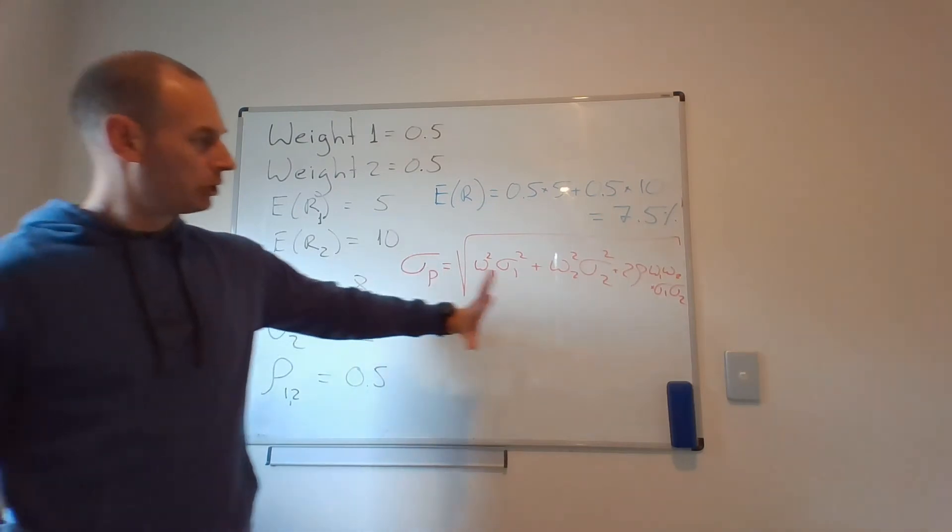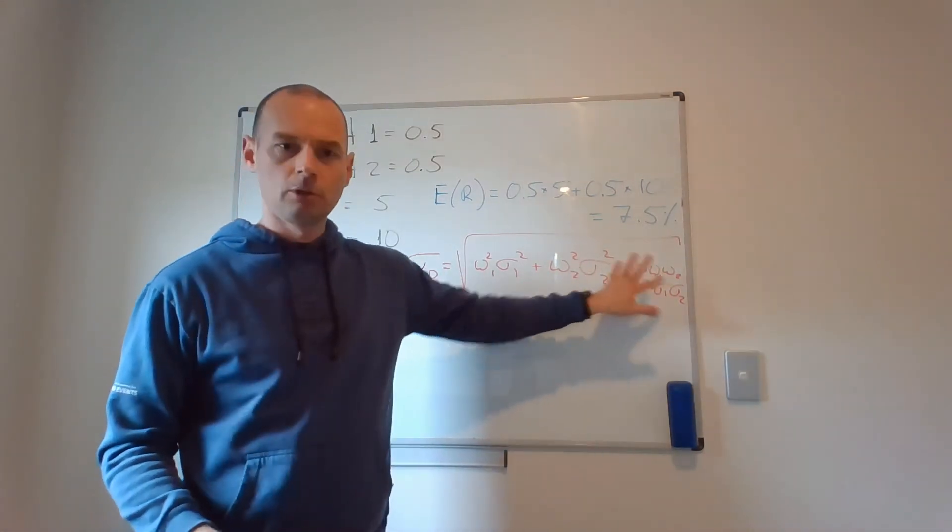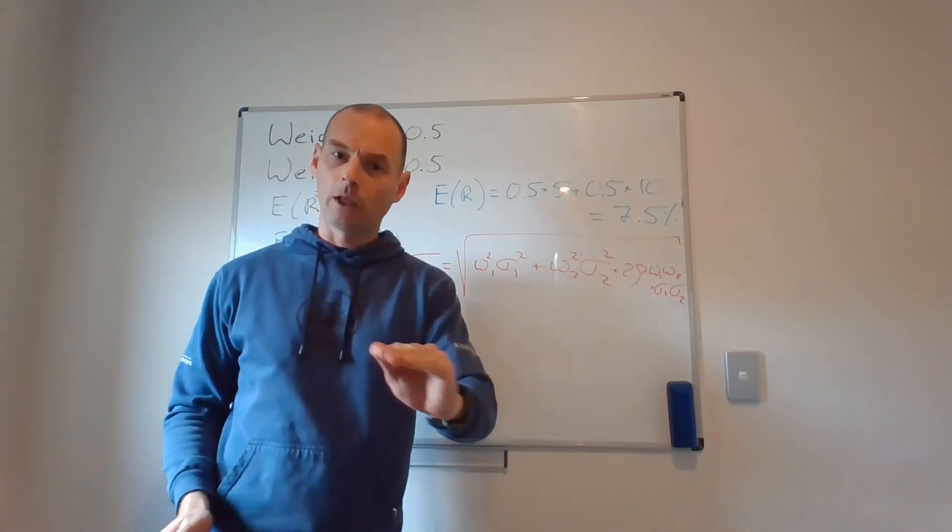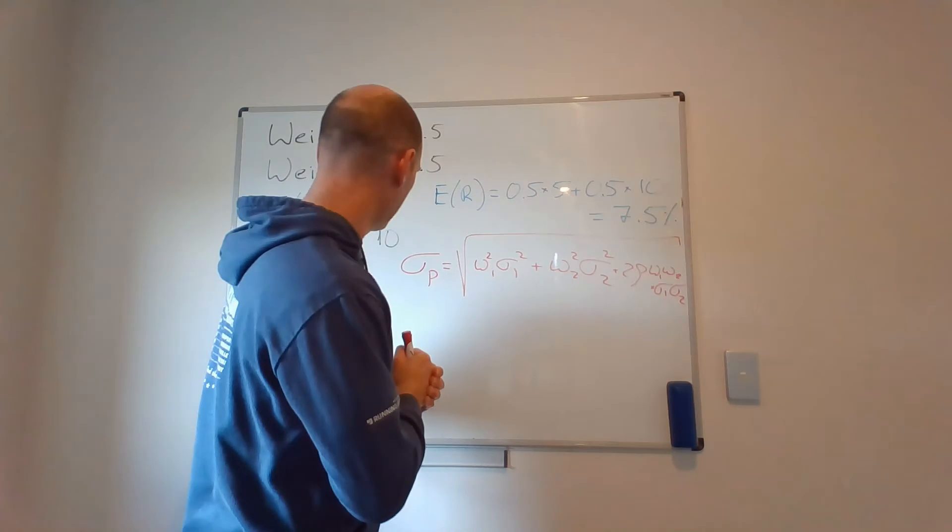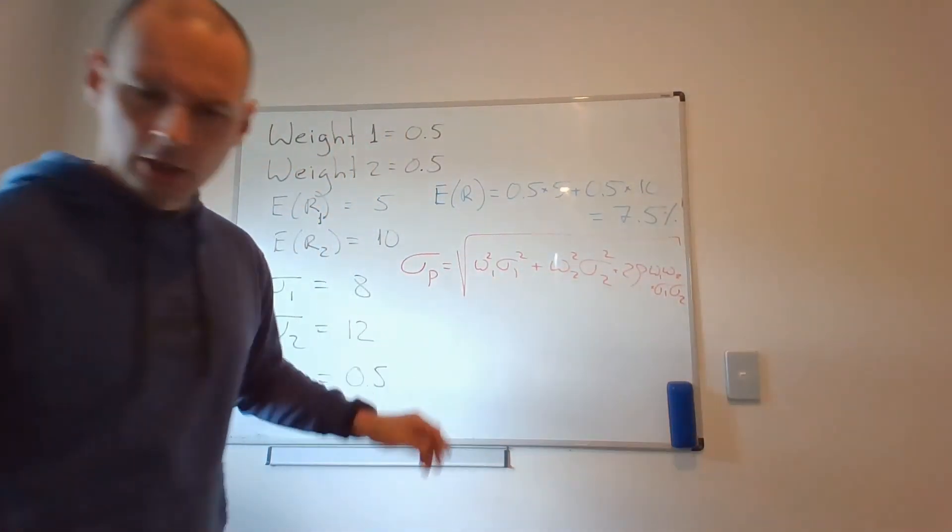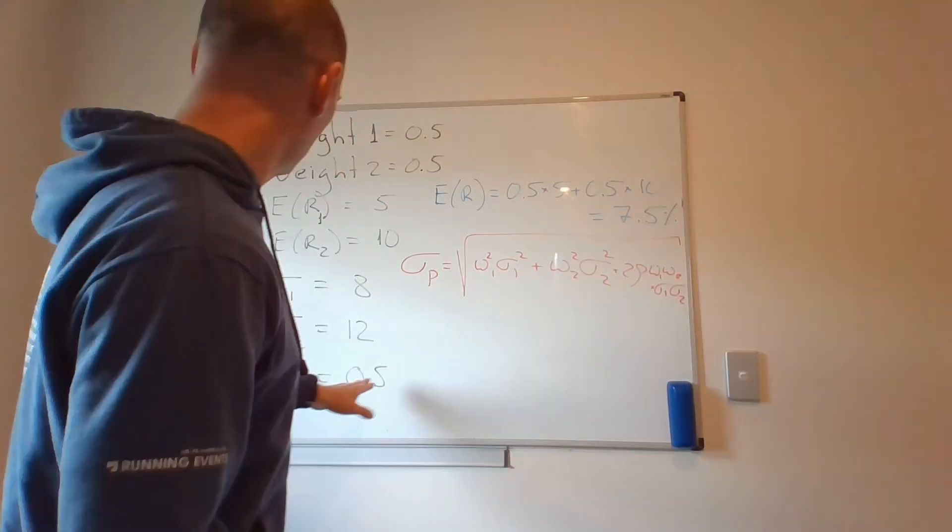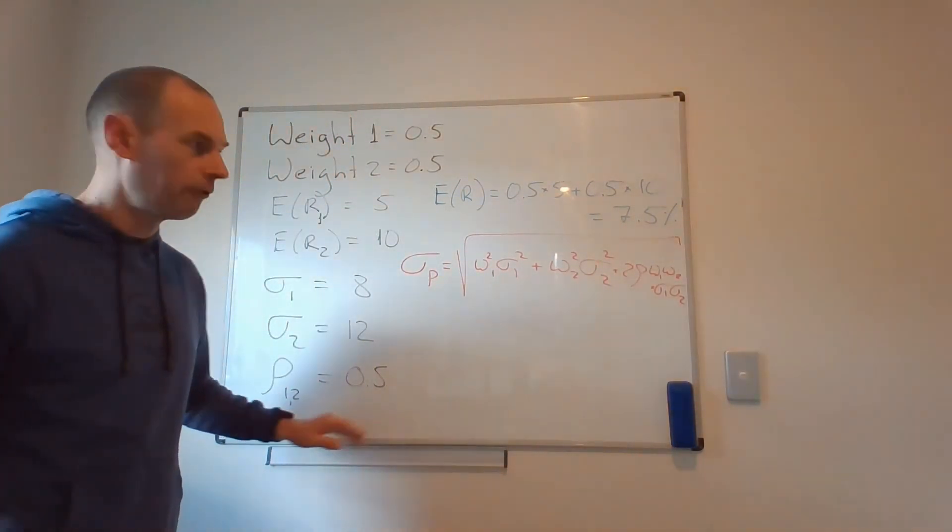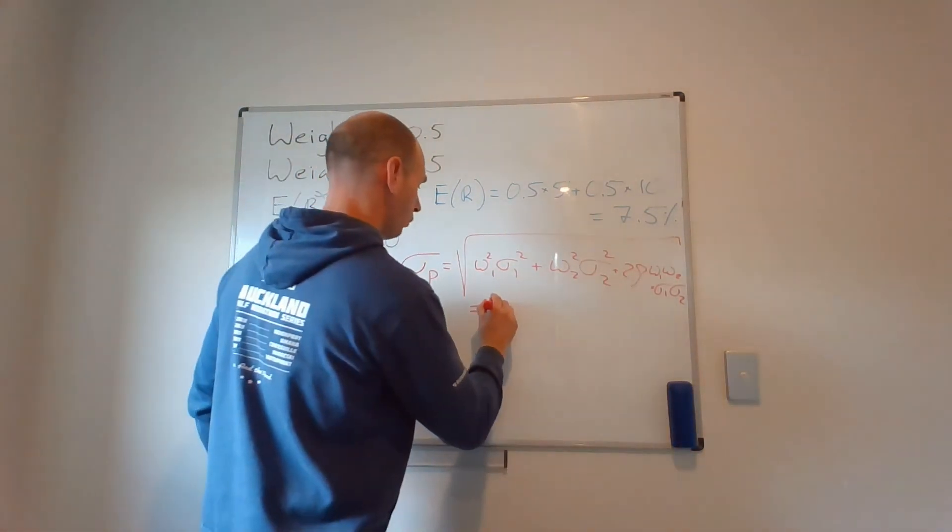Again, don't really worry too much about the contents of the formula. We will be preloading it in Excel and have a go at it. But I have done some computations prior to recording this video. And if my coefficient of correlation is 0.5, my standard deviation will be 8.71.